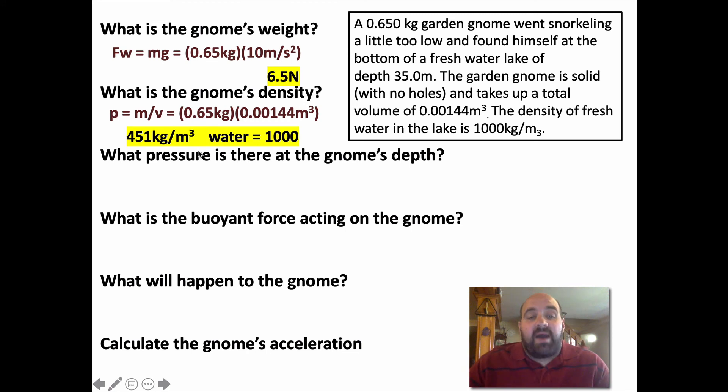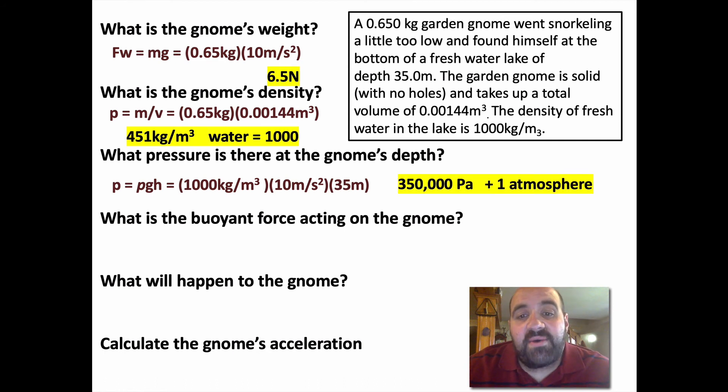What pressure is there at the gnome's depth? We know the formula for calculating pressure at various depths in water. Pressure equals ρgh. We know ρ, the density of the water. They tell us it's fresh water. We know g is gravity. We know his depth. The gnome finds himself at 35 meters. So pressure equals ρgh, 1000 times 10 times 35. Very nice numbers to work with. 350,000 Pascals. Now, technically, I will mark you wrong for not doing this, but that's the pressure due to the water. But we know there's also one atmosphere of pressure pushing down, which is just over 100,000 Pascals as well. So this would be about 451,000 Pascals if we did the math out properly.